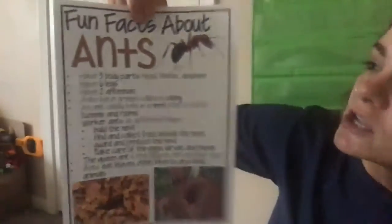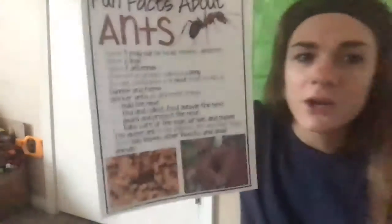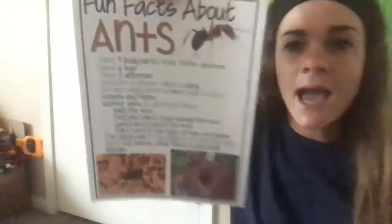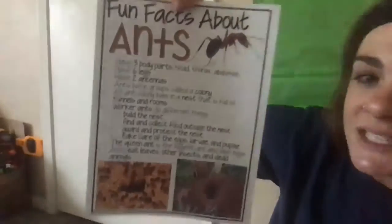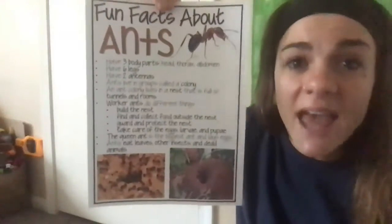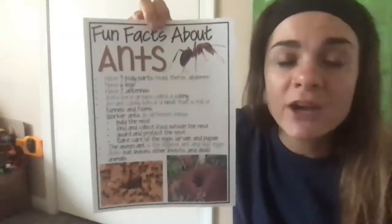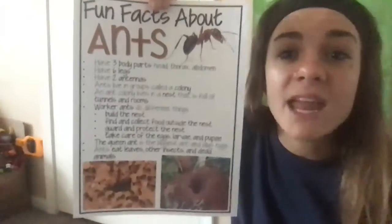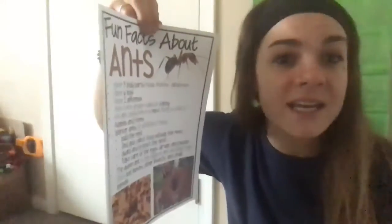So here are some fun facts about ants. They have three body parts: the head, the thorax, and the abdomen. They have six legs. Remember, all insects have six legs except for a spider — a spider has eight legs, so they're technically not an insect.